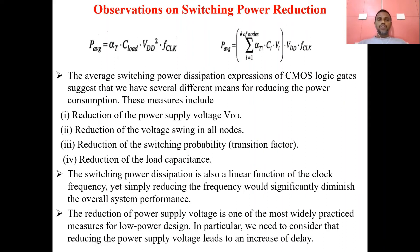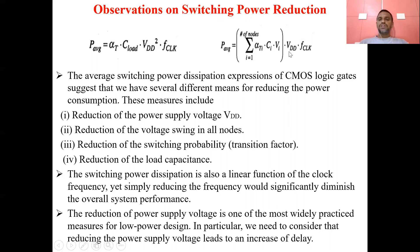Hello everyone, today I'm going to explain about switching power reduction. If we consider the equations from the previous discussion, the average switching power is: P_average = alpha_t × C_load × V_DD² × f, or alternatively P_average = summation from i=1 to number of nodes of alpha_ti × Ci × Vi × V_DD × f.